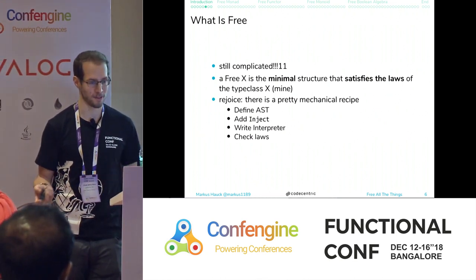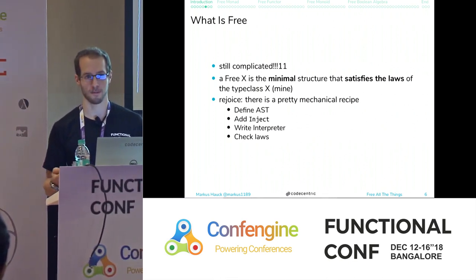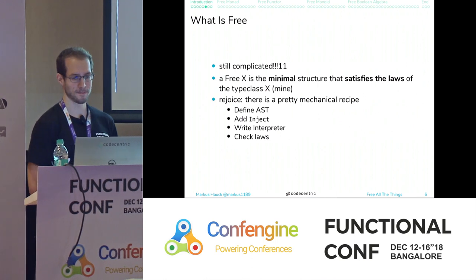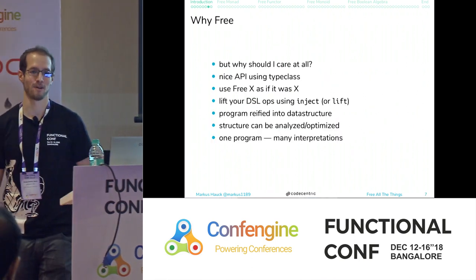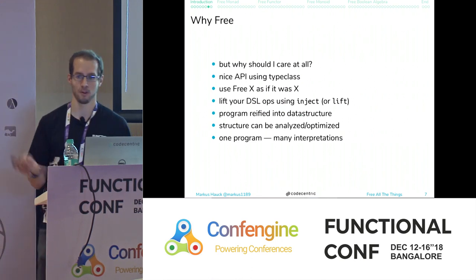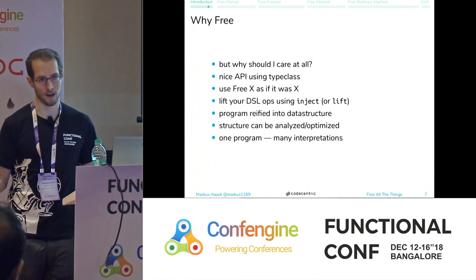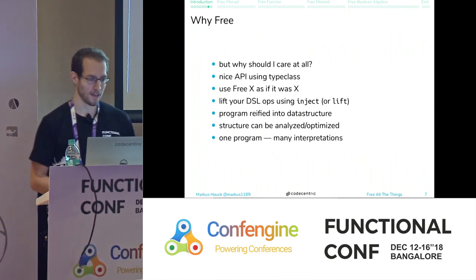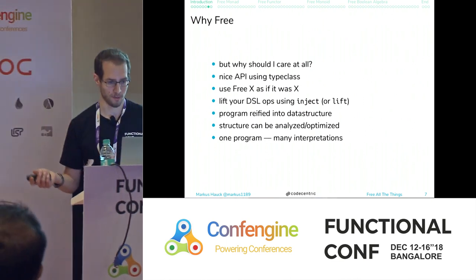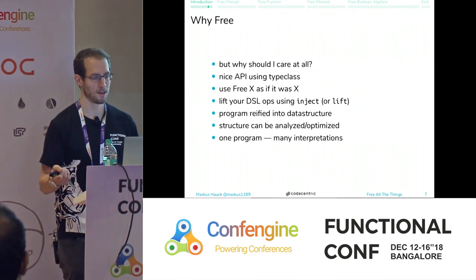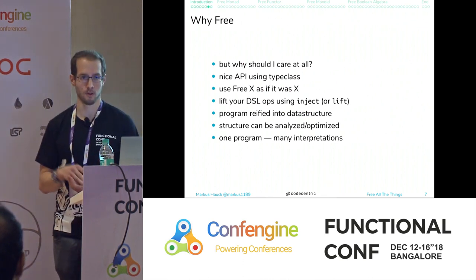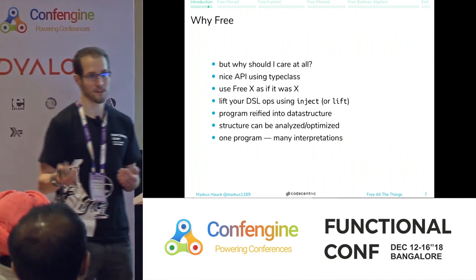There's an easy mechanical recipe: four steps repeated throughout. First, define an AST for the type class operations. Second, add an inject operator. Third, write an interpreter. Fourth, check the laws. Why should you care about free structures? You get a nice API based on the type class — if you have a free monad, every user who knows monads can use your DSL. You get your program back as a data structure, which you can optimize, analyze, and interpret in different ways, including in parallel, even if your user never thought about that.